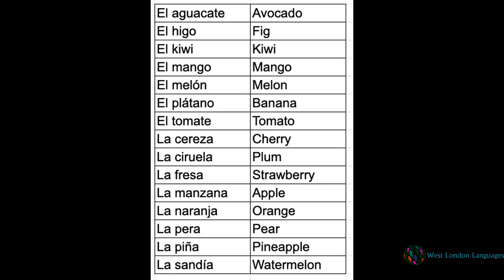Let's see if you can say the words after me: el aguacate, which is the avocado; el higo, which is the fig; el kiwi, which is the kiwi; el mango, which is the mango; el melón, which is the melon; el plátano, which is the banana; el tomate, which is the tomato; la cereza, which is the cherry; la ciruela, which is the plum; la fresa, which is the strawberry; la manzana, the apple; la naranja, the orange; la pera, the pear; la piña, the pineapple; la sandía, the watermelon.